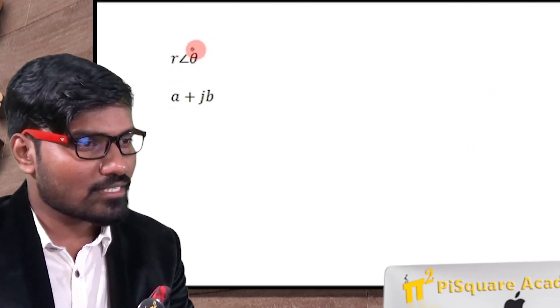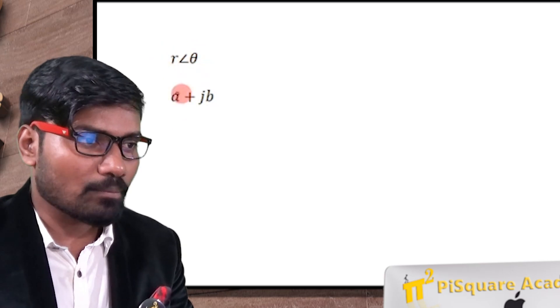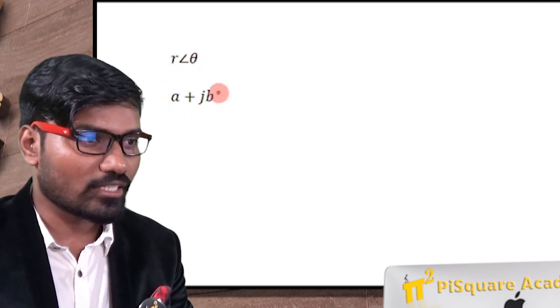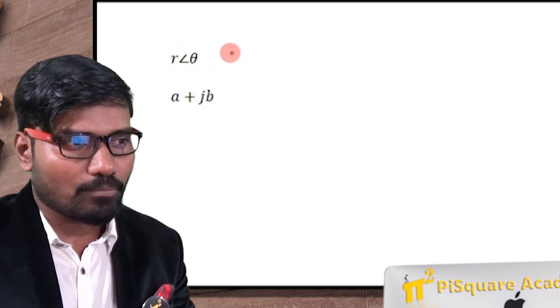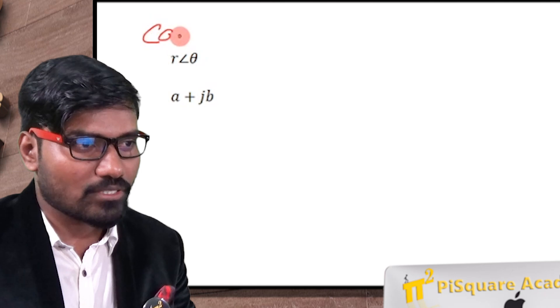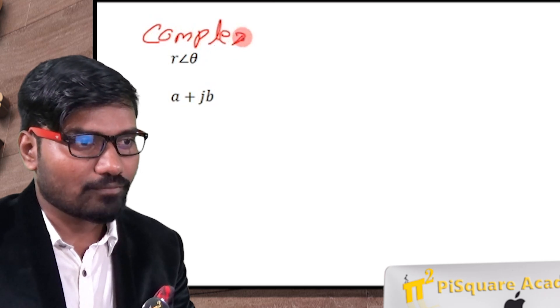Let's see, this is a representation of a polar form and this is a representation of rectangular form or cartesian form. So r is a magnitude, theta is an angle. This representation is called complex representation, complex number representation.